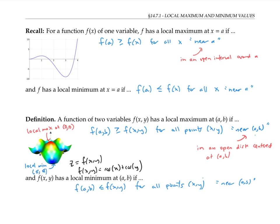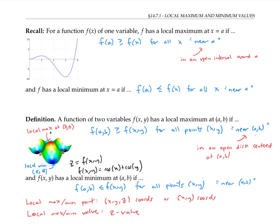Let me mention a bit of terminology. When we talk about a local max or min point, we mean the x, y, and z coordinates where the function has a local max or min, or sometimes just the x and y coordinates. However, when we talk about a local max or min value, then we're just talking about the z value — a single number. So in this example, since when I plug in zero and zero for x and y I get a z value of two, I can talk about the local maximum point of (0, 0, 2), or the local maximum value of two.